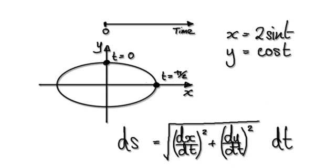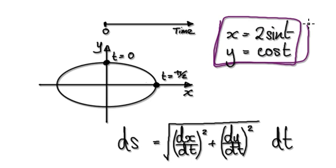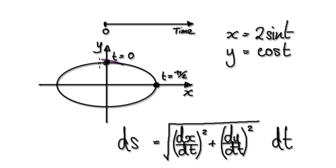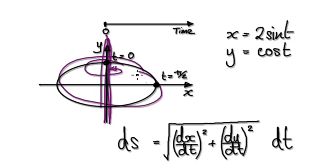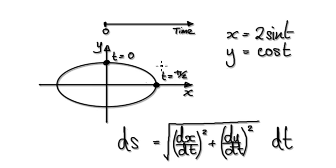In this video, we're going to look at the surface area of an ellipsoid. We've seen this in some of the earlier videos — when given these parametric equations, we trace out this ellipse. We're going to revolve this ellipse 360 degrees along the y-axis, and when you do that, you trace out a 3D solid called an ellipsoid. We're going to work out the surface area of that ellipsoid.